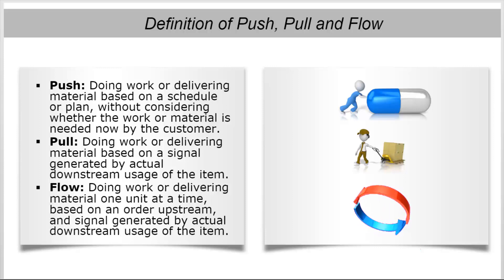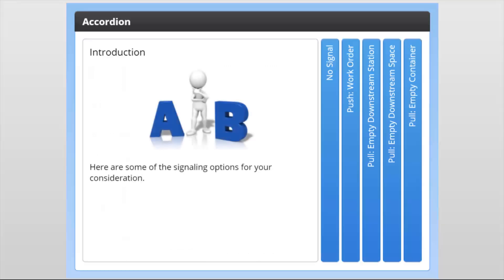Flow is a further refinement on pull, where you are moving units one at a time based on customer orders and also based on a pull signal. Let's now look at some practical examples of push and pull in a manufacturing environment.